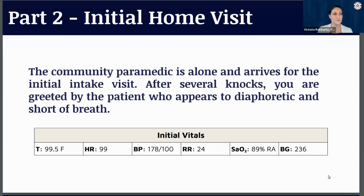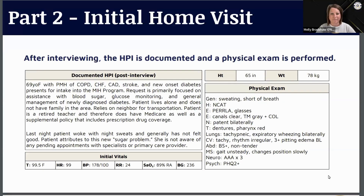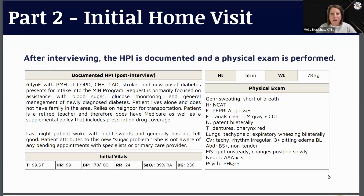The next piece is our physical exam. As a clinician it always starts with vital signs and that quick rapid assessment. The patient is diaphoretic and sweating, with vitals of temp 99.5, heart rate 99, BP 178 over 100, respirations 24, O2 sats 89% on room air, and a blood glucose of 236.